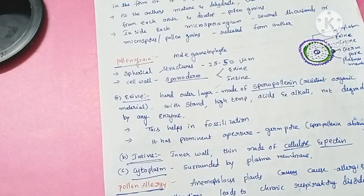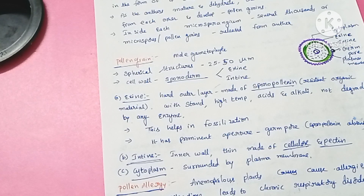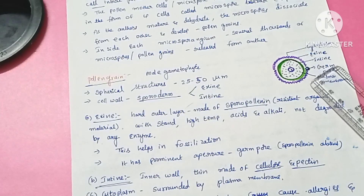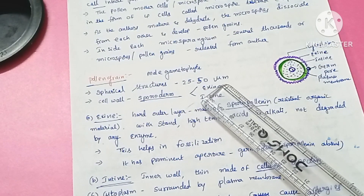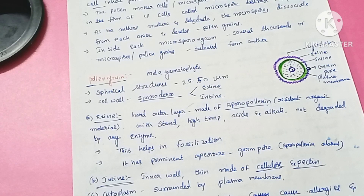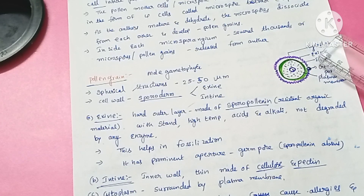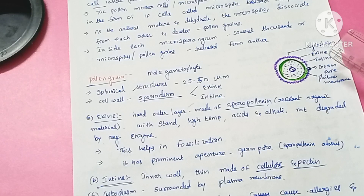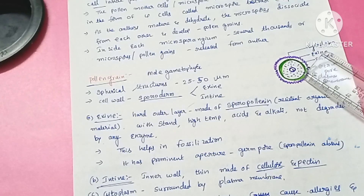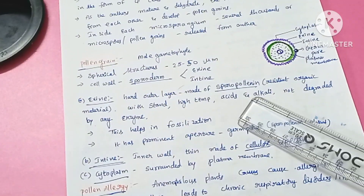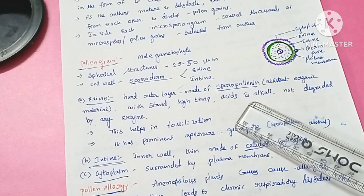The pollen grain is called the male gametophyte. Its structure is spherical, 25 to 50 micrometers in diameter. The cell wall of the pollen grain is called the sporoderm. This sporoderm consists of two layers: one is the exine and the other is the intine. The exine is the outermost layer, which is made of an organic material called sporopollenin.